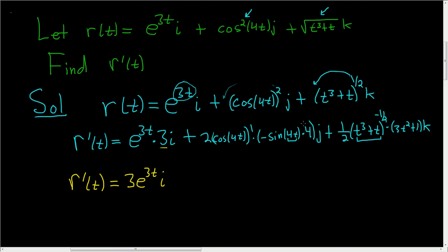Here, it looks like we have a negative 4 and a 2. So negative 8 cosine 4t sine 4t, and we still have the j.